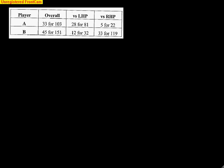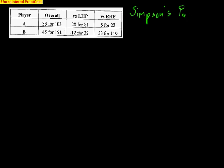I want to use this time here to talk about a pretty important concept in statistics. It's a concept that if you understand early on, it could really help you out. It's called Simpson's Paradox, and I'm going to use this baseball example to explain it as best I can.